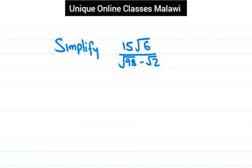Let's see the solution of this question. It's about relation numbers. The question is telling us to simplify 15 multiplied by the square root of 16 divided by the square root of 98 minus the square root of 2.